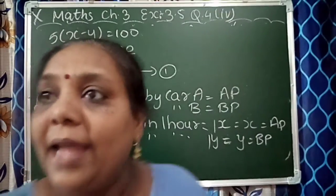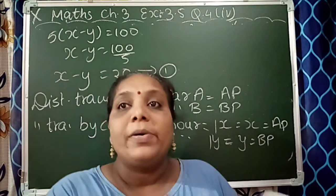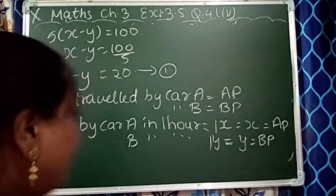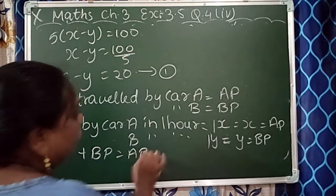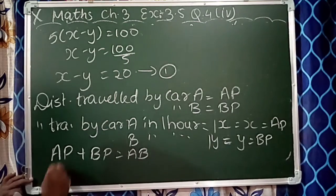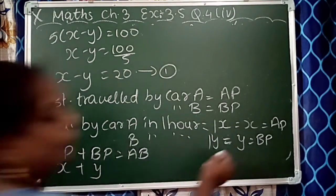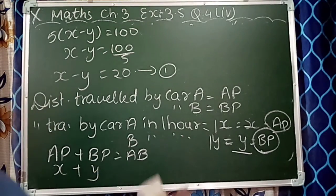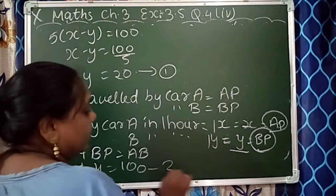Since both cars are going in opposite directions, clearly AP plus BP equals AB. So x plus y equals AB, which is 100 km. This is our second equation: x plus y equals 100.